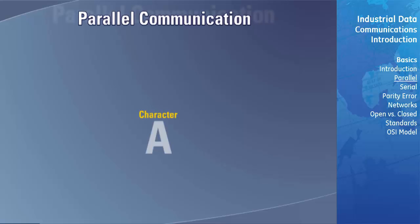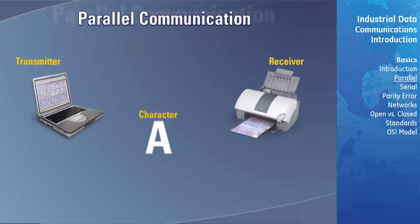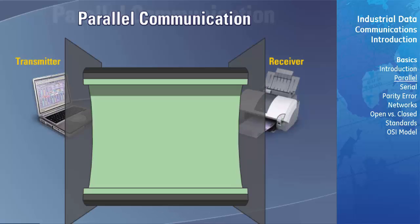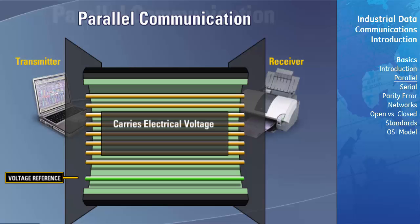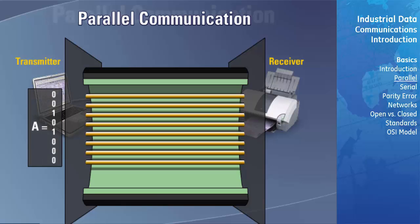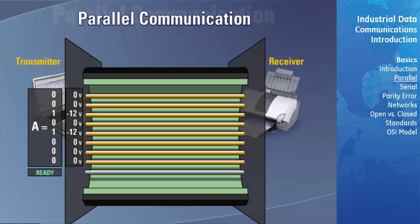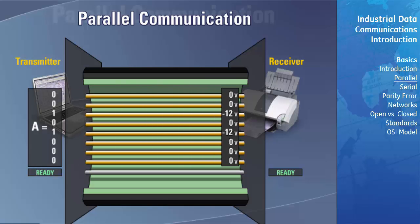Let's take a look at how the character A is transmitted through a parallel communication link. This type of link uses 8 separate conductors and a common connected between two devices. Each of these 8 conductors carries an electrical voltage which represents either the logic 1 or logic 0 bit code. The transmitter first converts the ASCII bit pattern for the letter A into voltage levels. Once converted, it is common to supply additional signaling to indicate to the receiver when the data is available to be read. For this purpose, an additional conductor is added as a 9th line. Once the data ready signal has been sent, the data is transmitted to the receiver.